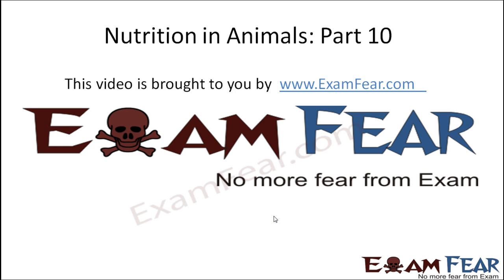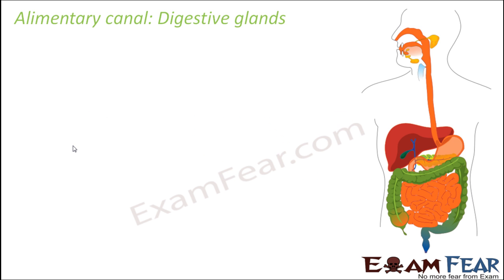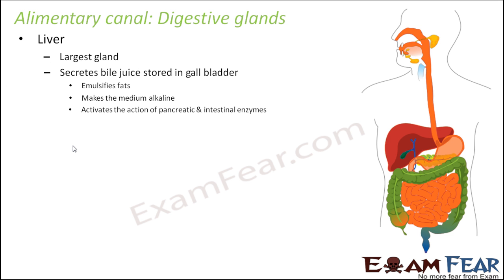This video on nutrition in animals part 10 is brought to you by examfear.com. When we talk about the stomach, it is important to discuss some very important digestive glands. One such digestive gland is the liver. In fact, the liver is the largest gland in the human body. A gland is any organ which secretes hormones or enzymes, and these secretions play a very important role in our body. The liver secretes bile juice, which is stored in the gallbladder.